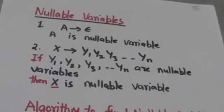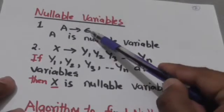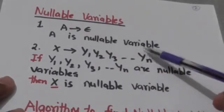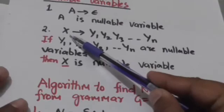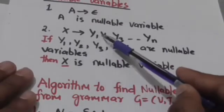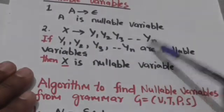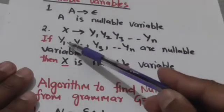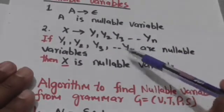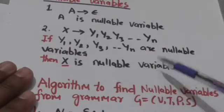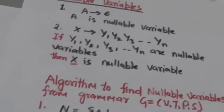Hello friends, welcome back. In this tutorial we will study about nullable variables. If there is a variable A for which there is a production of the form A derives empty string, then A is a nullable variable. And if there is a variable X for which there is a production X derives Y1 Y2 Y3 up to Yn, and symbols Y1 Y2 Y3 up to Yn are all nullable variables, then X is also a nullable variable.